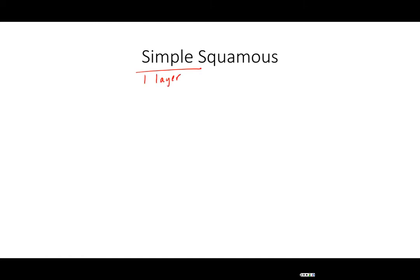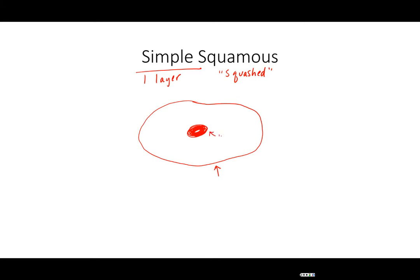We're going to start by looking at simple squamous. Simple means one layer of cells, and squamous tells us it's going to be a squashed or flattened cell. If you're looking straight down at the cell, it very much looks like a fried egg — we get the oval shape from our cell membrane, and at the center we have our cellular nucleus. If you're looking at the side, we would expect to see a very flattened cell with a very flat, oval-shaped nucleus at the center.